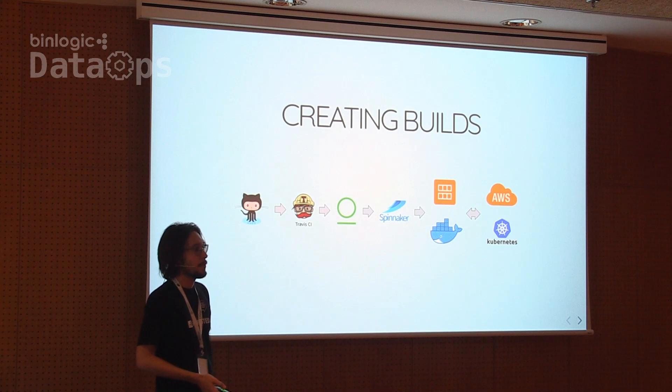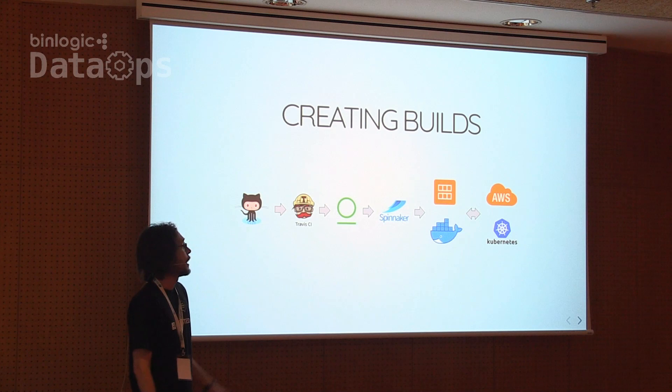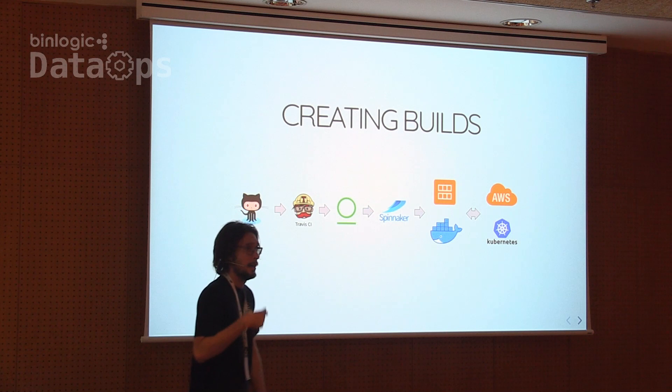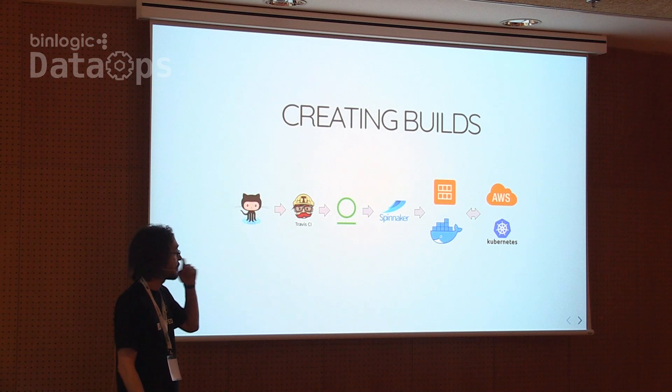This is a small picture of our basic pipeline at ShipState. We have our code stored in GitHub Enterprise. Every time a developer makes a push to a branch or to master, a pipeline is triggered in Travis. It will run the tests, and after tests are successful, we create an artifact — usually an RPM or a Debian package — which we push to our artifact repository.